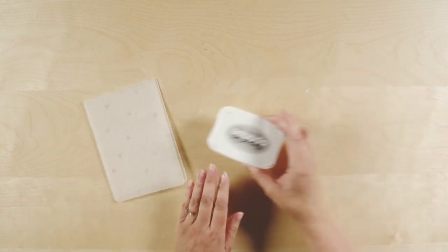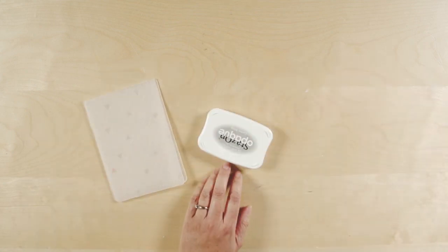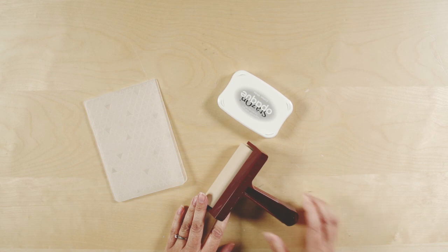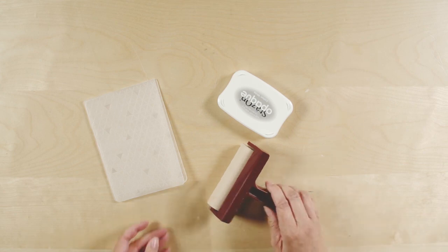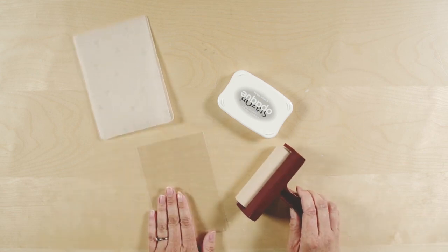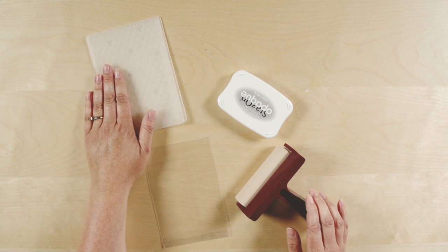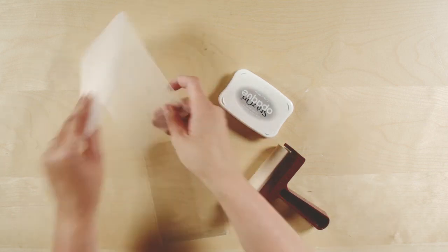I am going to use White Stazon, my Brayer, and a 4x6 cellophane bag, as well as that same Tiny Triangles Embossing Folder.